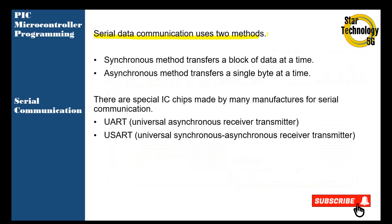Serial data communication uses two methods. The synchronous method transfers a block of data at a time. The asynchronous method transfers a single byte at a time. There are special ICs made by many manufacturers for serial communication — UART (Universal Asynchronous Receiver Transmitter) and USART. Just like MAX232, we will use this IC to communicate using serial communication.